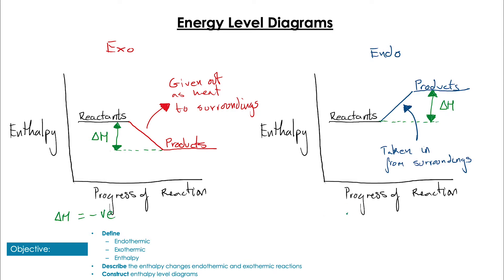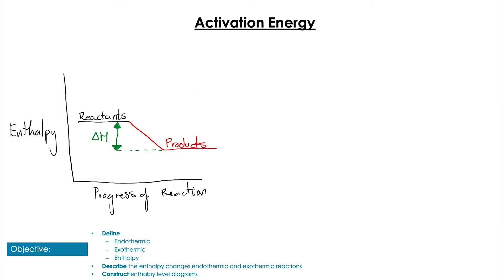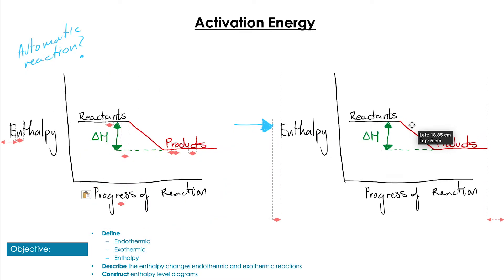However, these diagrams pose a problem. They kind of suggest that exothermic reactions would be automatic, no energy is required to get them started. So why don't they all just happen anyway and give out energy? Well the reason for that is it's not quite that simple. We actually need to take into consideration activation energy, which means a more accurate representation of this reaction might look like this.